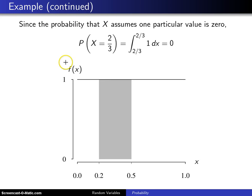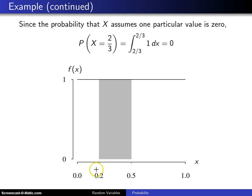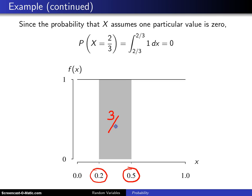That is illustrated in the picture below, which was done in R. Here is x and here is f of x. Notice that the probability density function is constant at 1. The probability of falling between one-fifth, which is 0.2, and one-half, which is 0.5, is the area underneath the probability density function between those values. That area is shaded here, and it is equal to three-tenths.